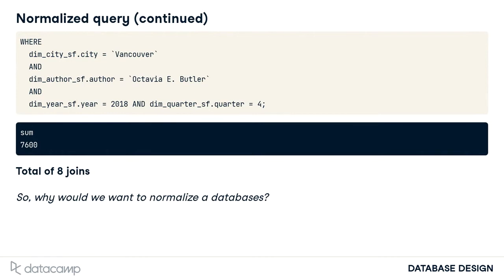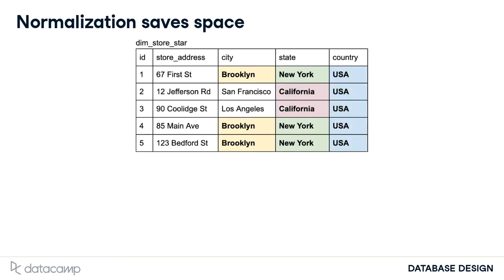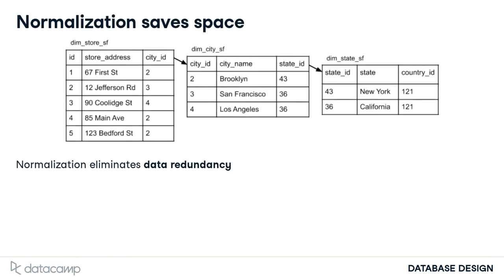So why would we want to normalize a database? Normalization saves space. This is intuitive seeing how normalized databases have more tables. Let's take a look at the store table in our denormalized database. Here we see a lot of repeated information in bold, such as USA, California, New York, and Brooklyn. This type of denormalized structure enables a lot of data redundancy. If we normalize that previous schema, we get this. Although we are using more tables, there's no data redundancy — the string Brooklyn is only stored once. The state records are stored separately because many cities share the same state and country. We don't need to repeat that information. Instead, we can have one record holding the string California. Here we see how normalization eliminates data redundancy.